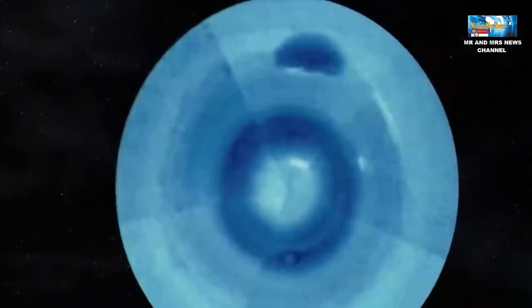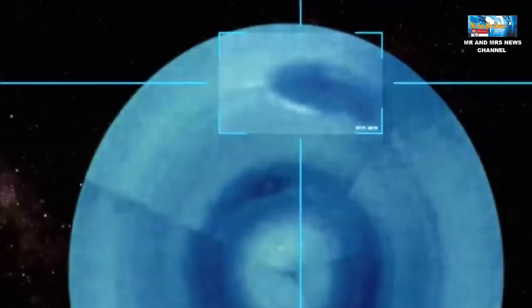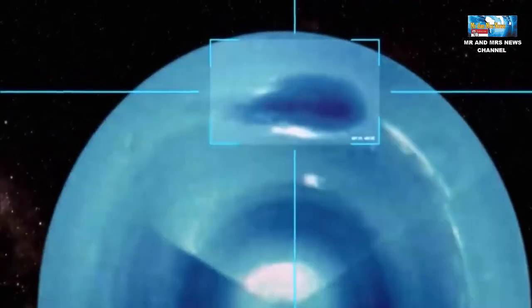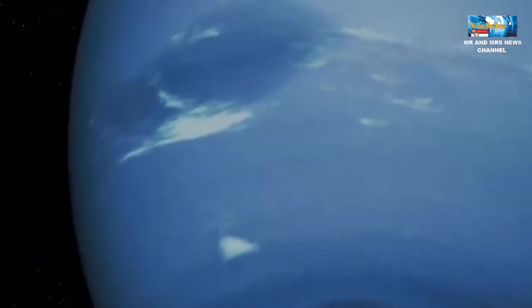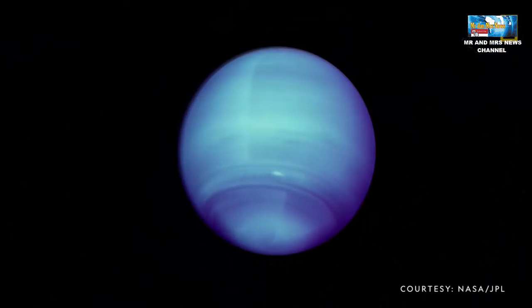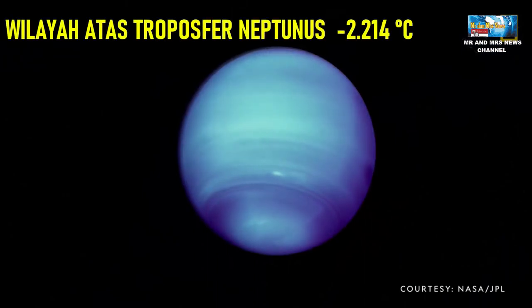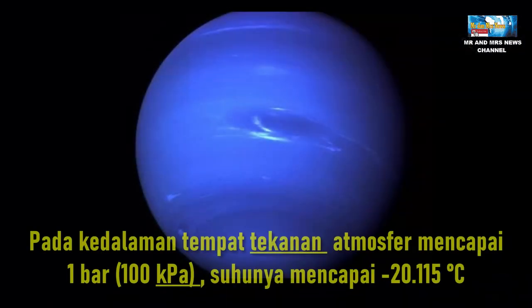Neptune's diverse weather compared to Uranus is believed to be caused by its high internal heat. Although Neptune is located half the distance from the sun as Uranus and only receives 40% of sunlight, the surface temperatures of both planets are roughly equal. The upper troposphere of Neptune has a temperature of minus 221.4 degrees Celsius. At depth where atmospheric pressure reaches 1 bar, the temperature reaches minus 201.15 degrees Celsius.